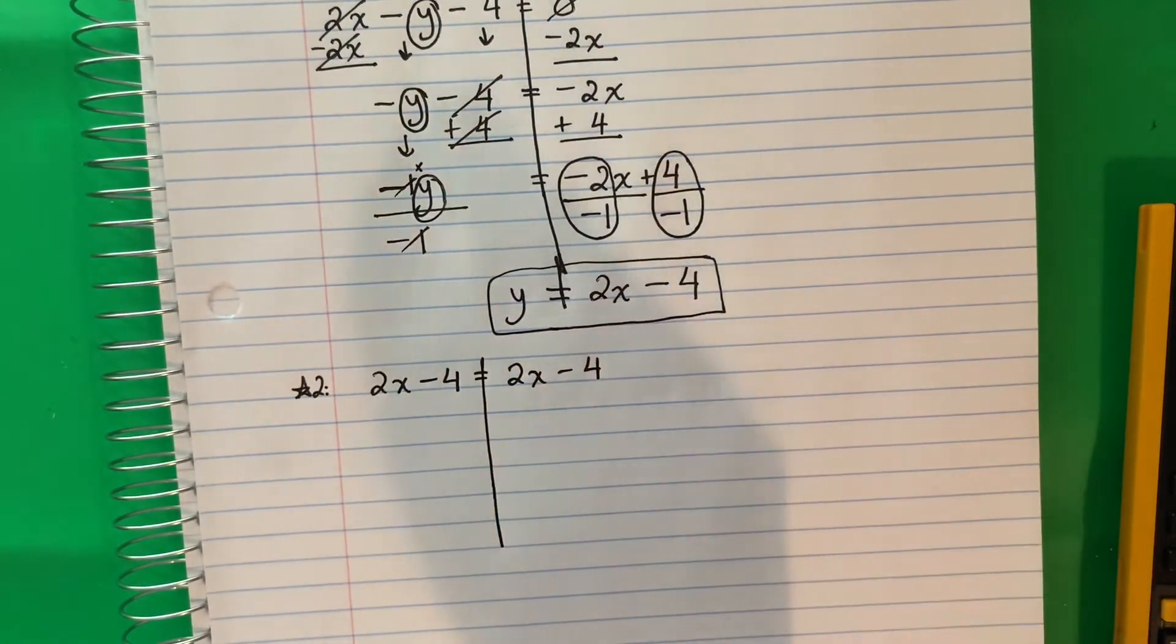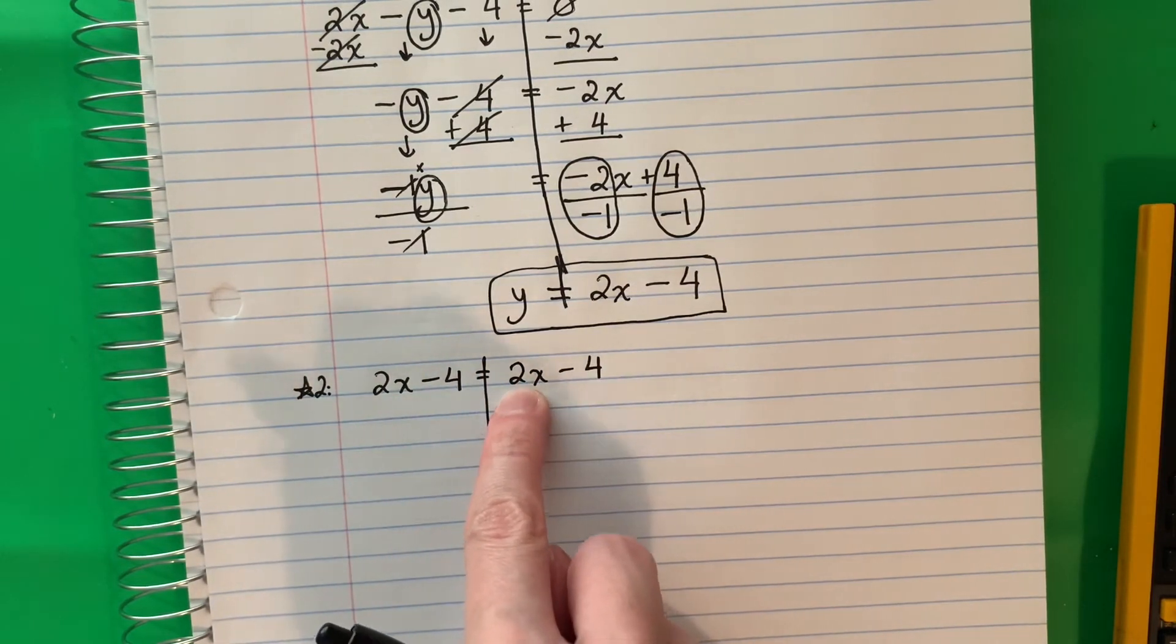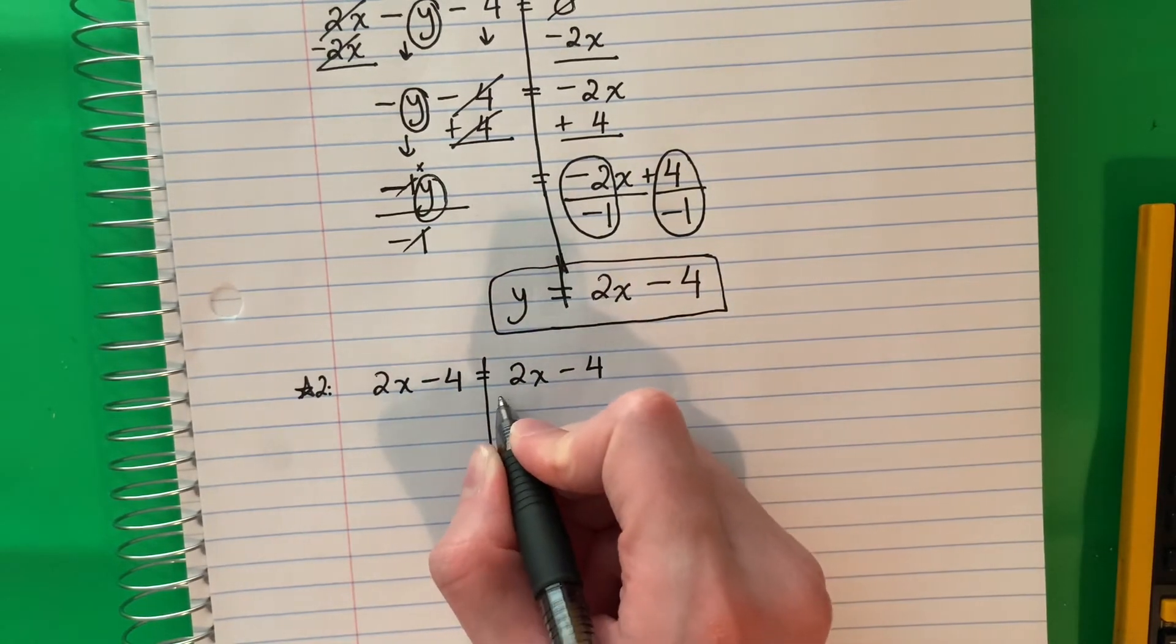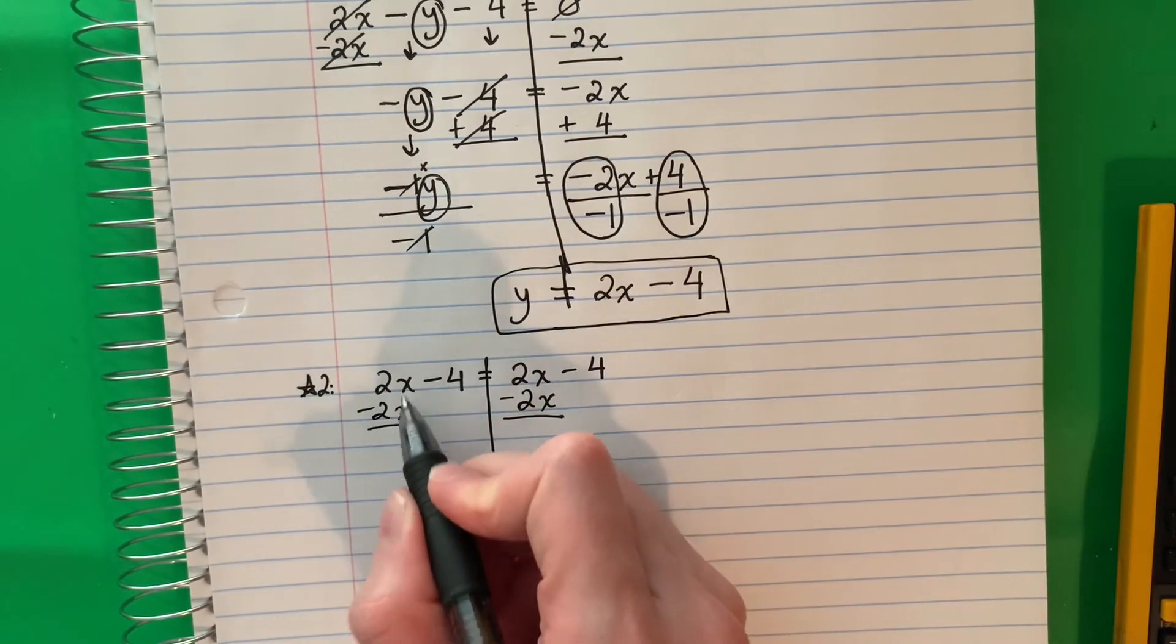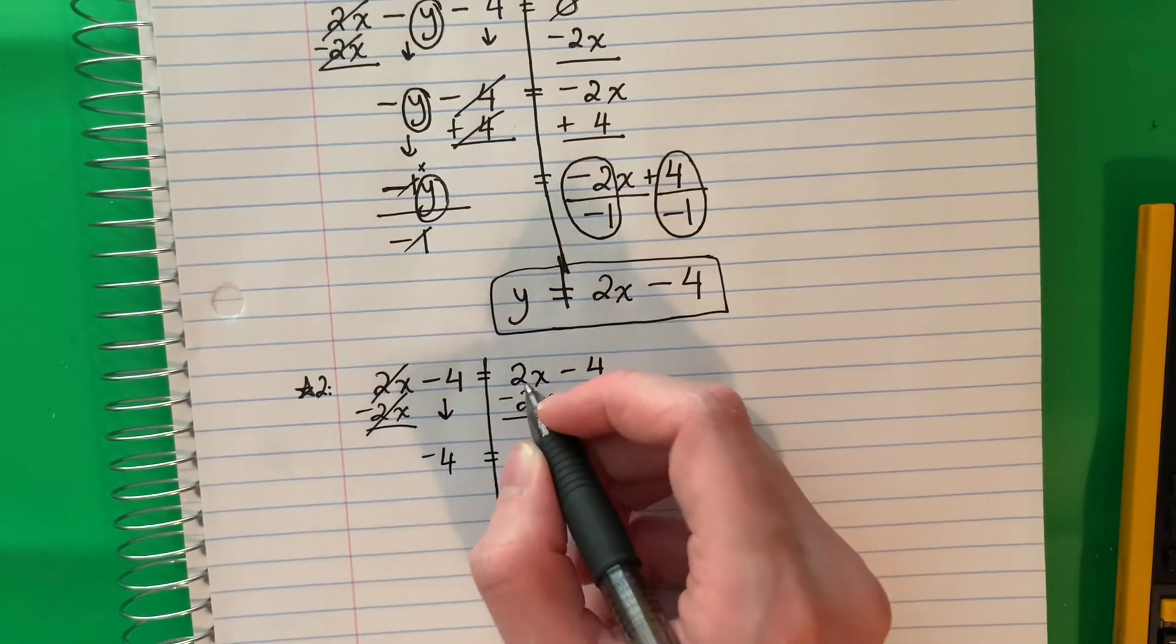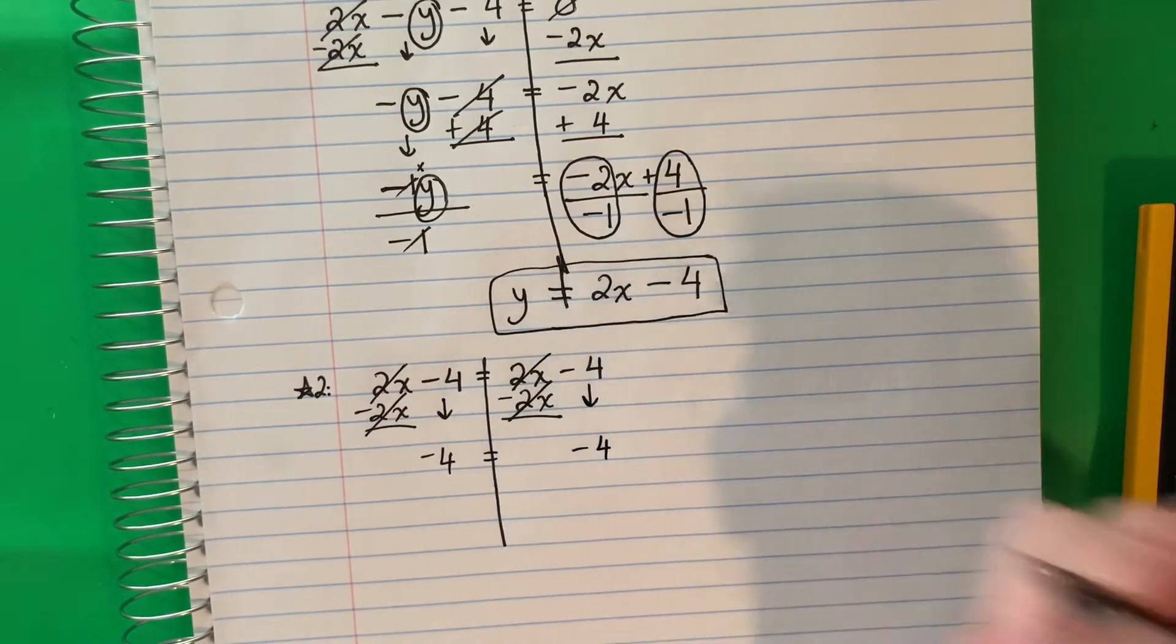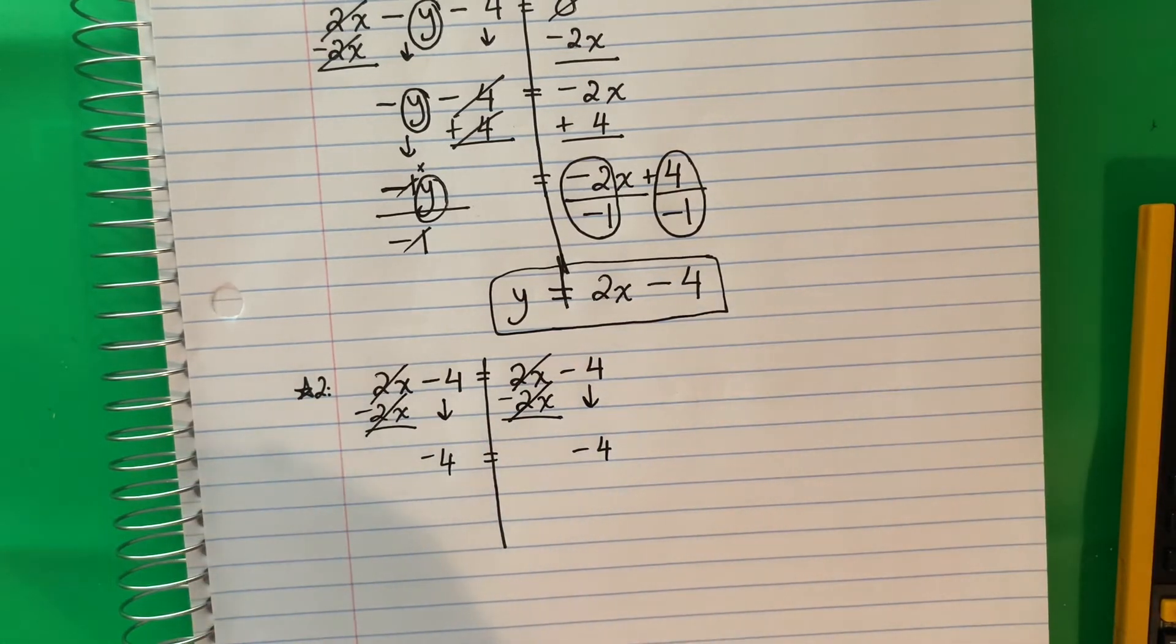I'm going to move one of the x's, the one on the right. This is positive, the opposite is negative. Minus 2x. Copy minus 2x. X with x. 2 minus 2 is 0, cancel. Copy down negative 4 equals. 2 minus 2 cancels, it's 0. Copy down negative 4. There's no more letters, so I have to stop here. I cannot continue.